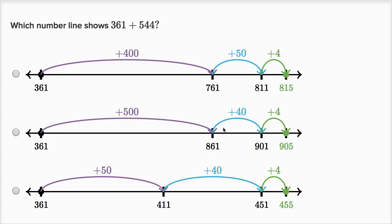Now this one adds 500, then 40, and then four. So this is adding 544 to 361. We see that it is 905.